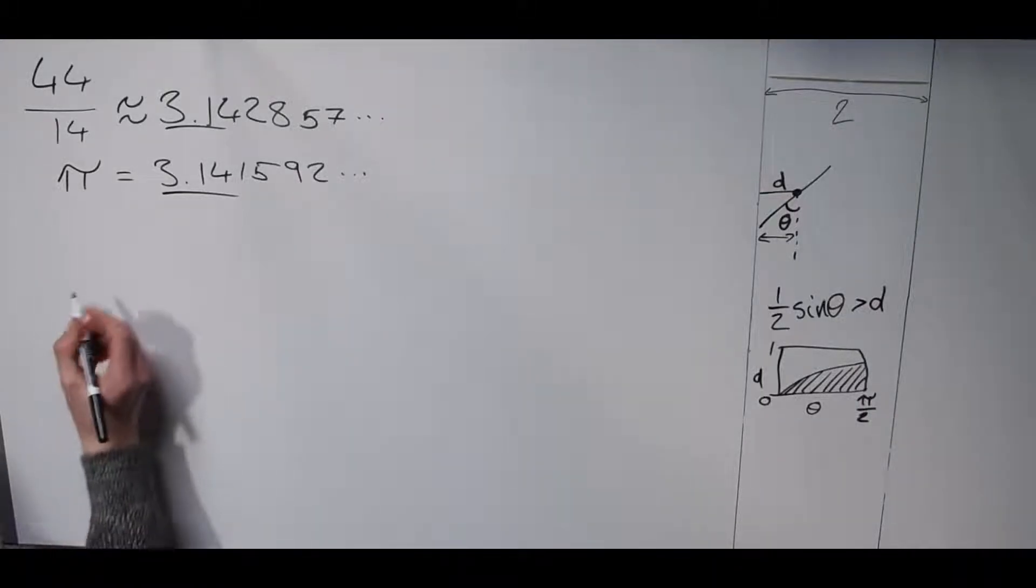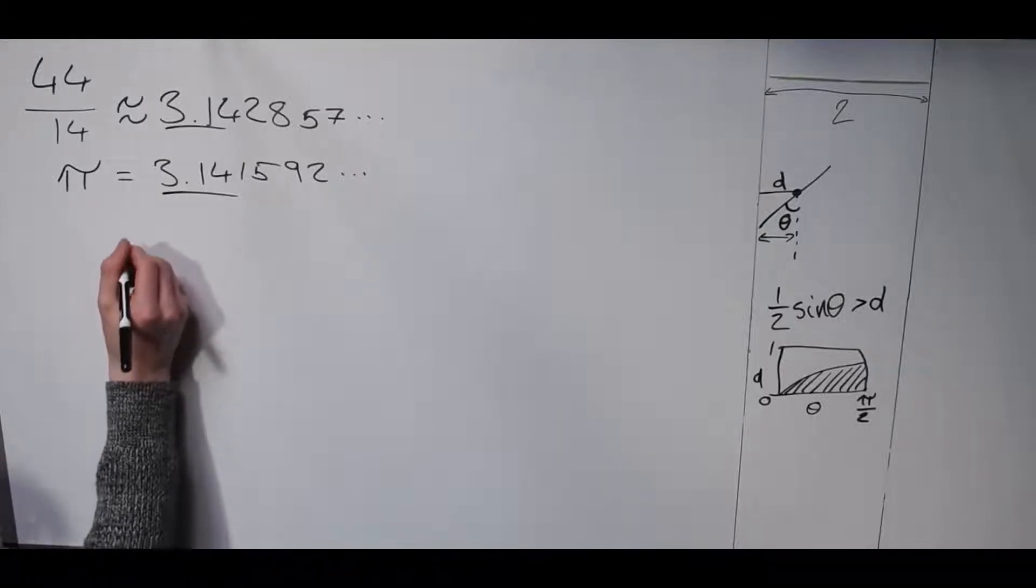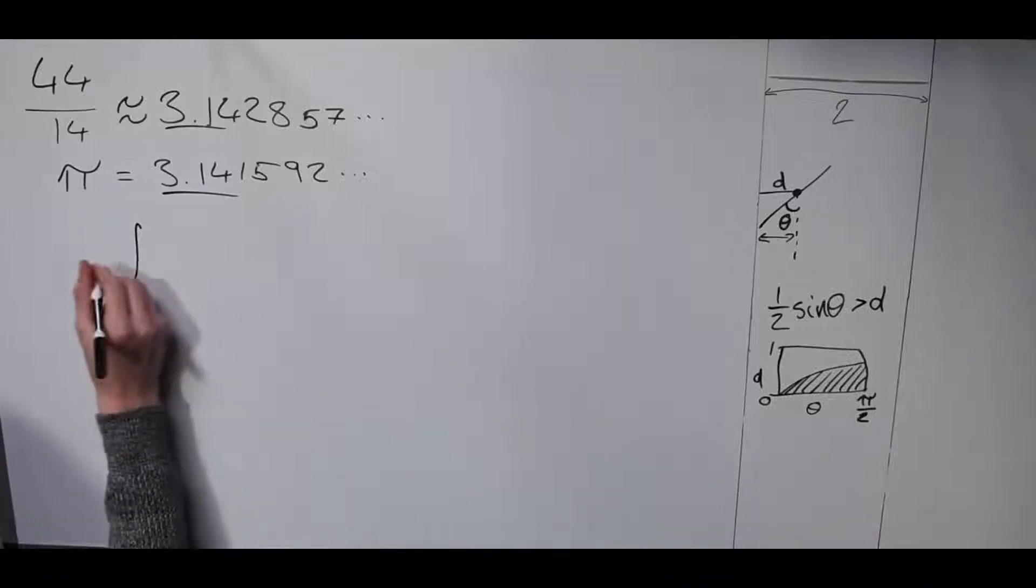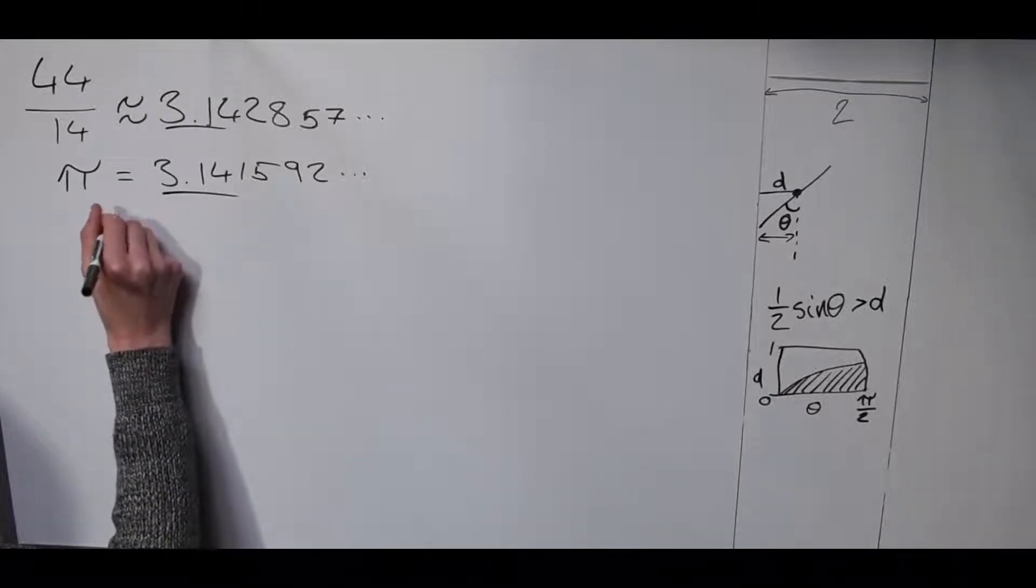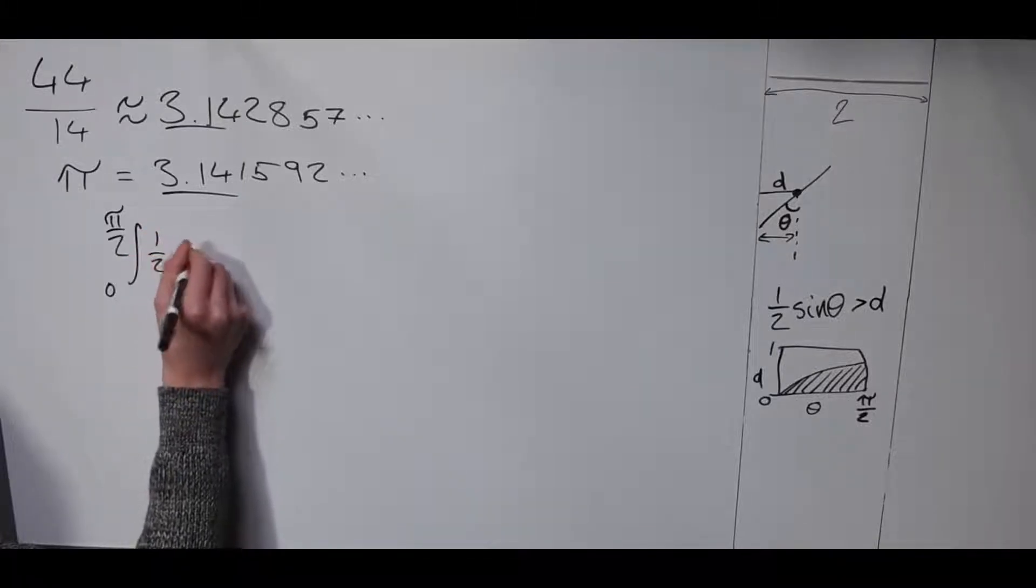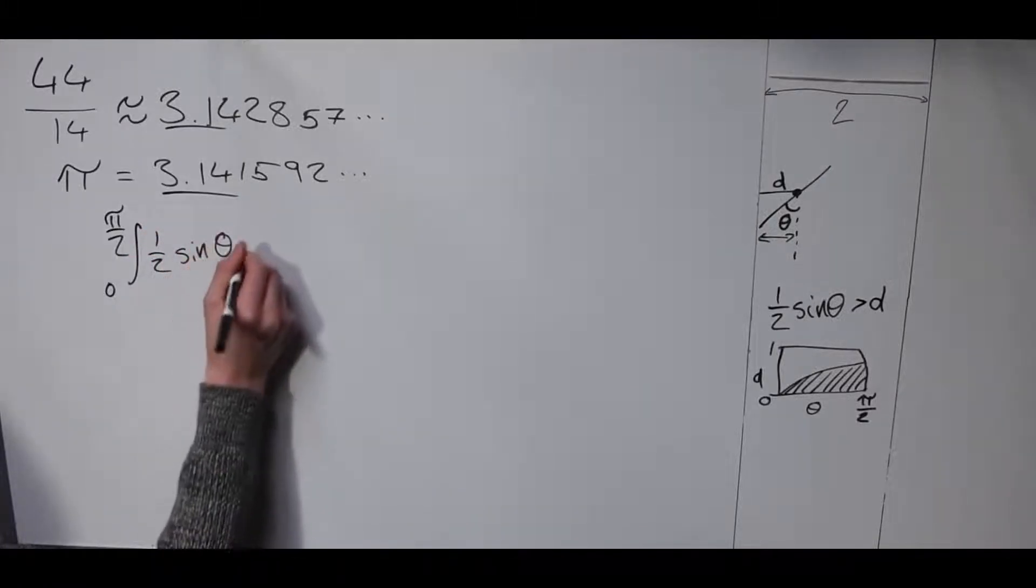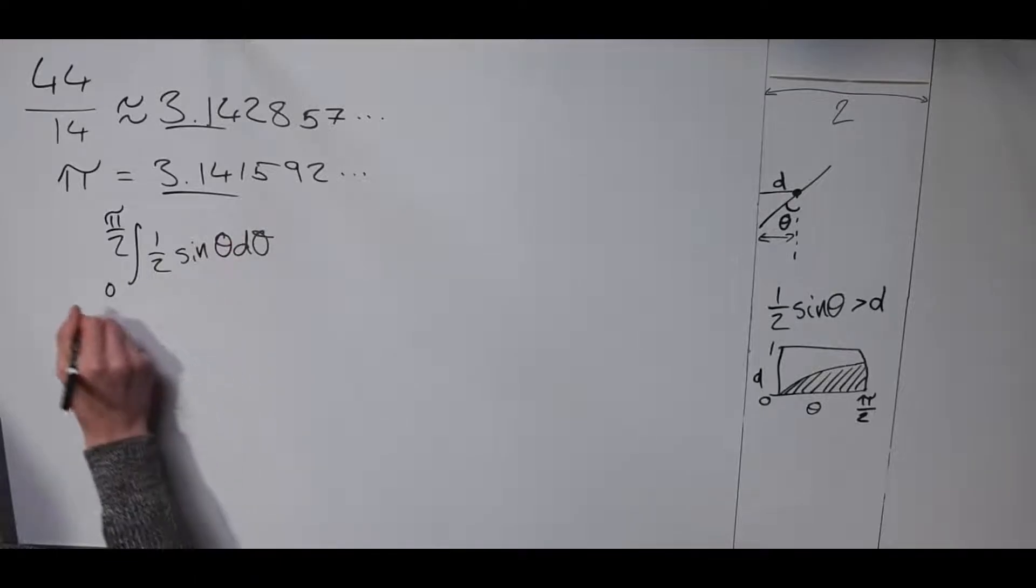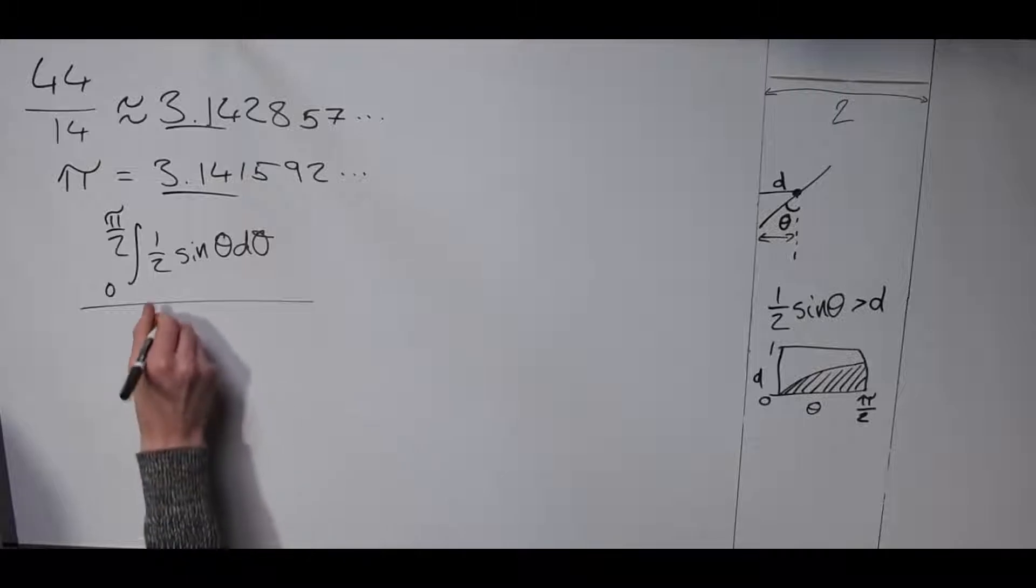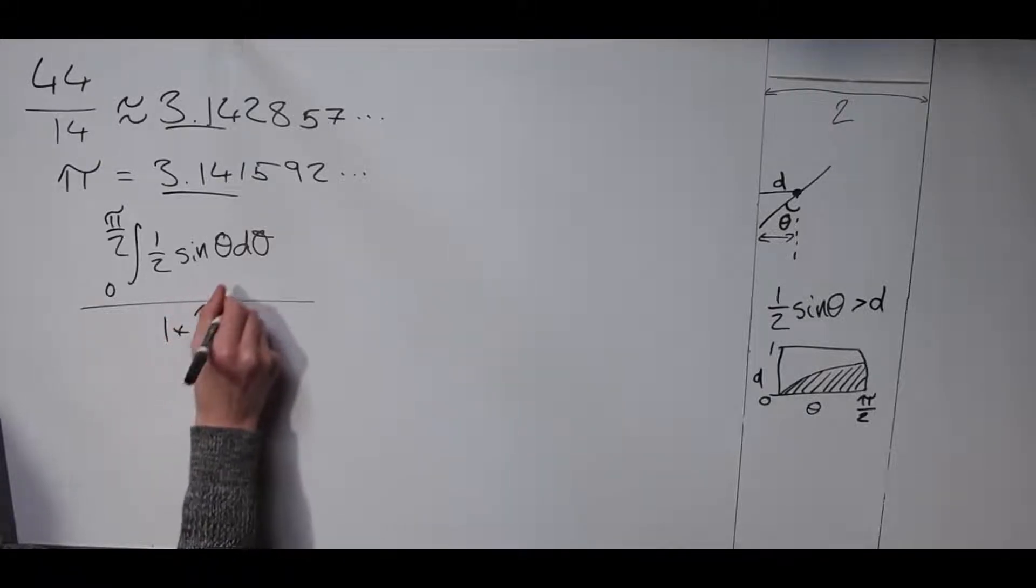To work out the shaded region, we can just do an integral from zero to pi over two. The function is half sine theta d theta, and that's out of a total of base times height is one times pi over two.